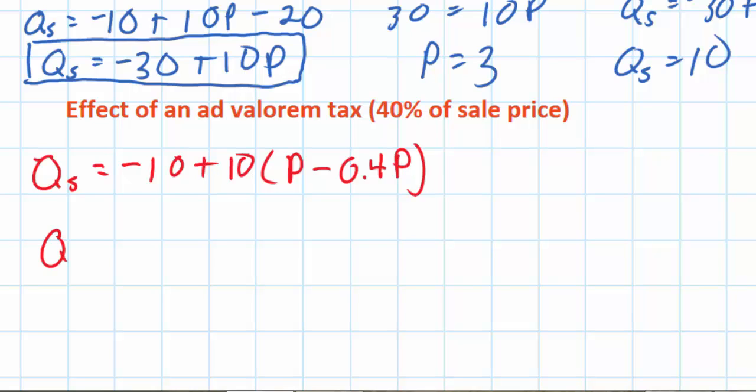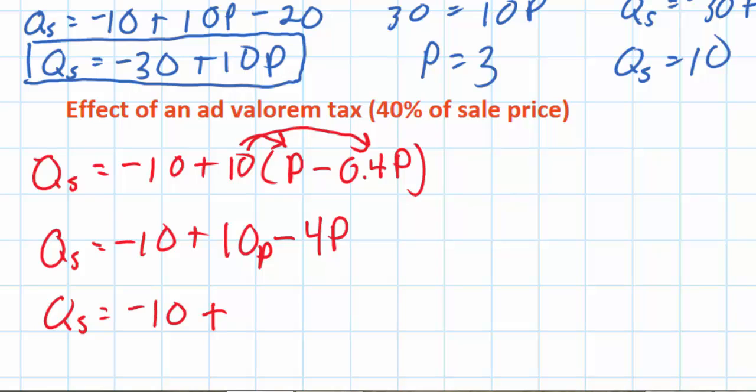So I can simplify this now. Qs equals minus 10 plus 10 times P minus 10 times 0.4P, which is 4P. Simplify it again. Qs equals negative 10 plus 10P minus 4P equals 6P. Notice that the difference here is that the Q intercept of supply, or the C variable, has not changed. However, the D variable, which represents how responsive producers are to price changes, has changed. So what's going to happen? The gradient of my supply curve is going to change.